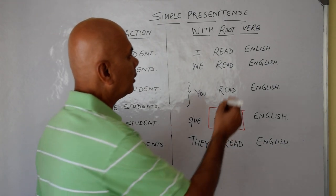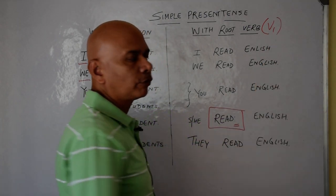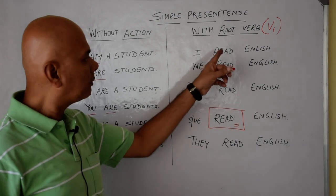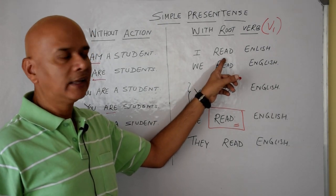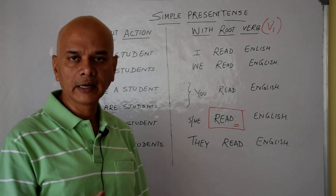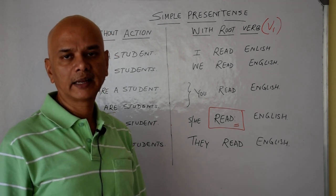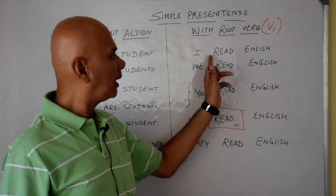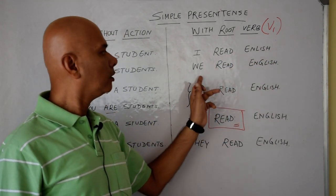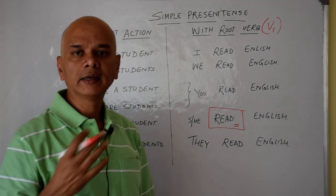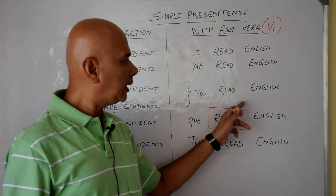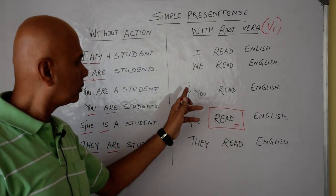As you have seen in the previous video, we will use the V1 form of the root verb for simple present tense. Here I have used the root verb 'read': I read English daily, or I read English every day. Subject-verb-object: I read English, we read English.